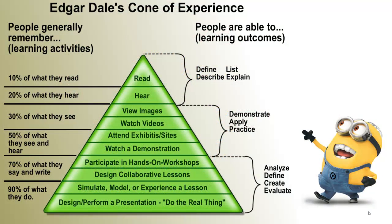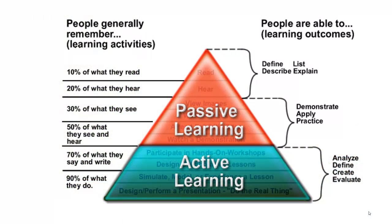In the 1940s, Edgar Dale surmised we remember things based on observing different kinds of media. William Glasser built upon Dale's work by establishing more finite percentages. According to Glasser, we tend to learn 10% of what we read, 20% of what we hear, and 30% of what we see. We tend to remember 50% of what we see and hear. When it comes to higher order or active learning, we tend to remember 70% of what we discuss, 80% comes from what we experience, and 95% of retention comes from what we teach others.